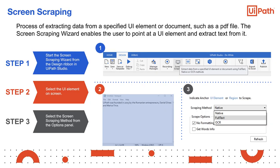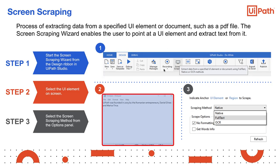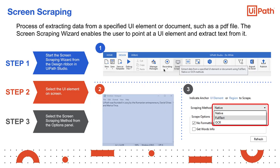The screen scraping wizard enables the user to point at a UI element and extract text from it. First, start the screen scraping wizard from the design ribbon in UiPath Studio. The screen goes into computer vision mode, highlighting the UI elements it identifies with blue. Once the user selects the UI element, UiPath Studio will automatically choose a screen scraping method. After it finishes extracting the text, the wizard shows the outcome, and the user can select one of the three methods to customize it using the properties, then click the refresh button to refresh the outcomes.